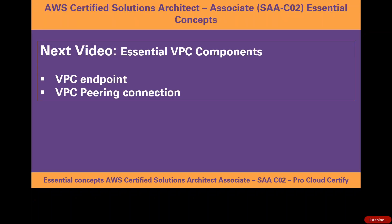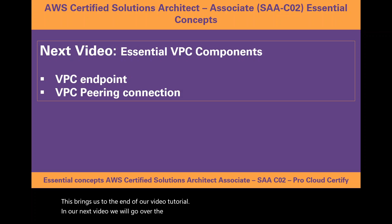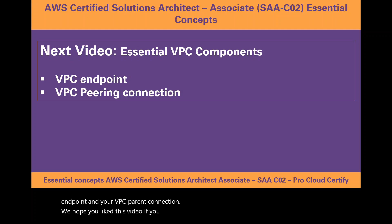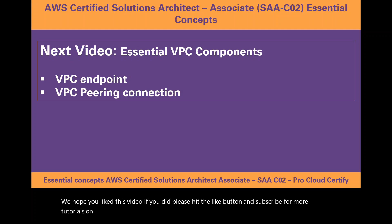This brings us to the end of our video tutorial. In our next video we will go over the final essential VPC components, which are your VPC endpoint and your VPC peering connection. We hope you liked this video. If you did, please hit the like button and subscribe for more tutorials on the AWS Solutions Architect Associate exam. Wishing you the best of luck for your cloud career journey.